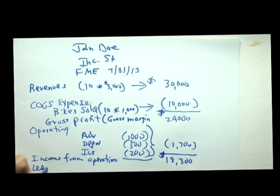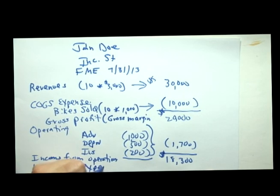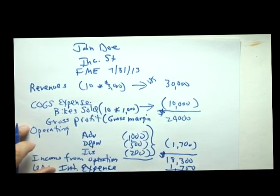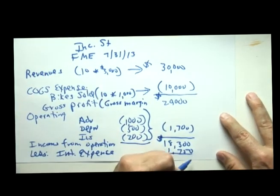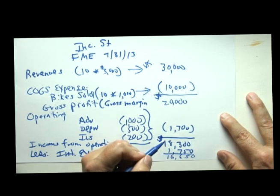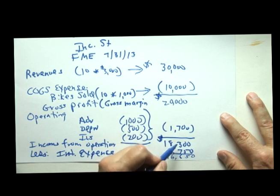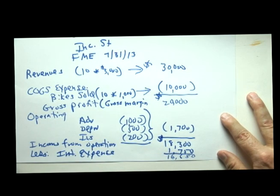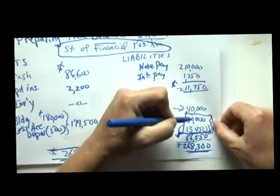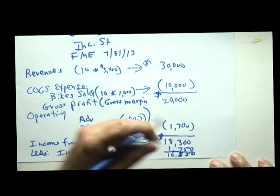We now subtract our non-operating expense called interest expense of $1,750. That gives us $18,300 less $1,750, which should be the amount that agrees with our balance sheet — that is $16,550. And our balance sheet shows net income to be $16,550, which exactly agrees with our income statement.